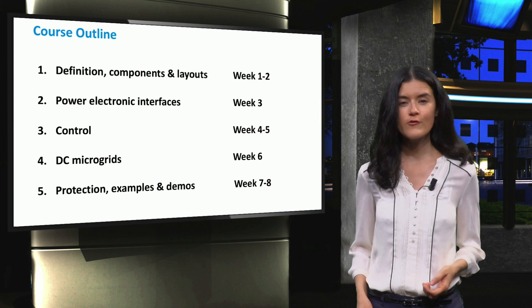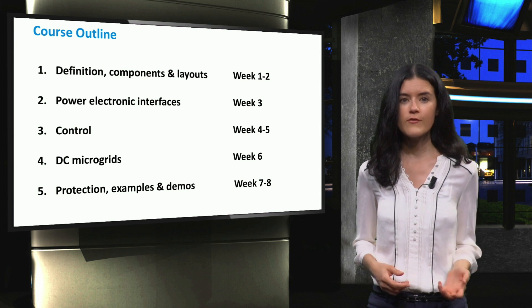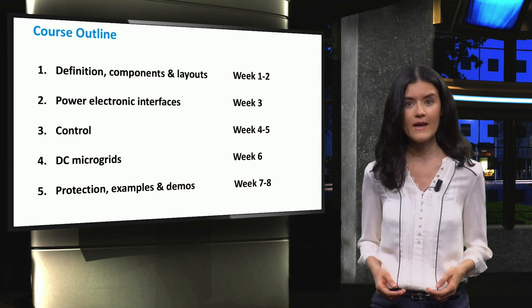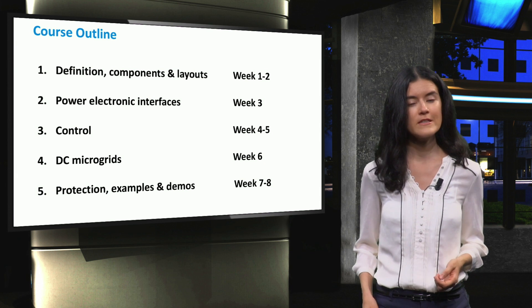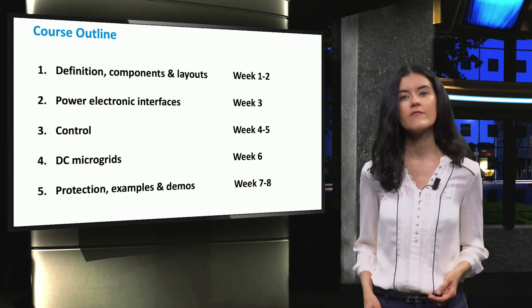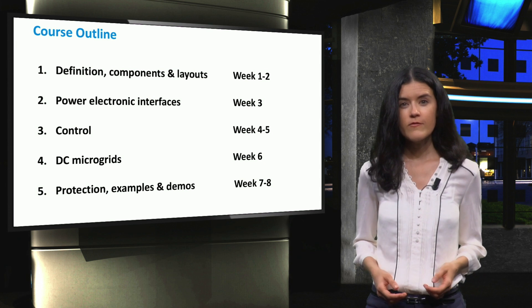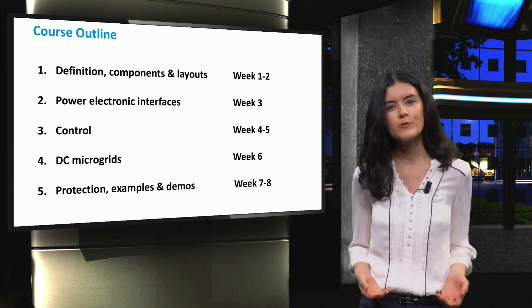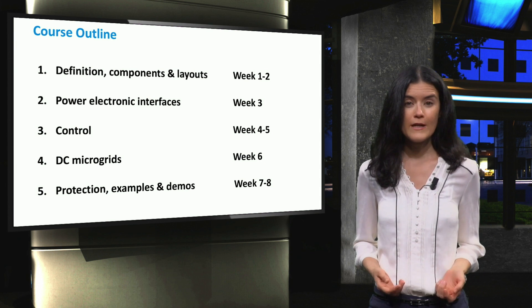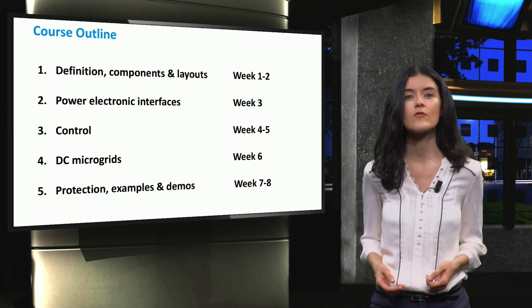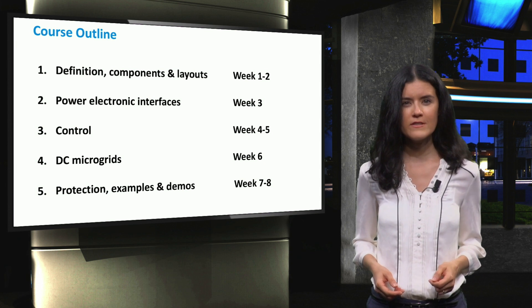Our course on the Integration of Photovoltaic Systems in Microgrids is divided into five parts. After a short introduction, the first two weeks will address the definition, components and layouts of microgrids. In week 3, we will discuss power electronics interfaces in microgrids. Then in weeks 4 and 5, we will look into the control, which is seen as the heart of a microgrid. In week 5, we focus on the emerging DC microgrids. In weeks 7 and 8, we discuss protection schemes within microgrids and then finish the course with an overview of demonstration sites.